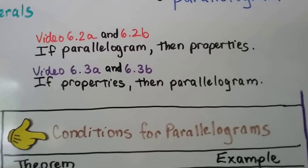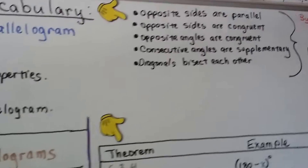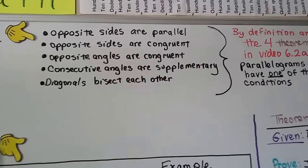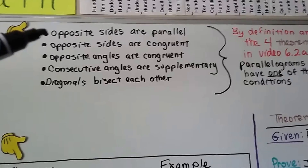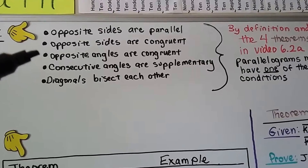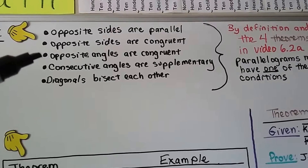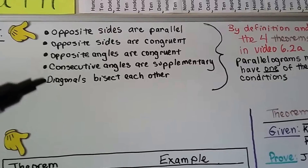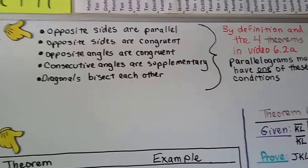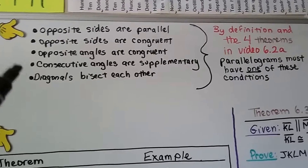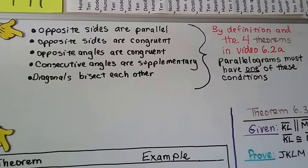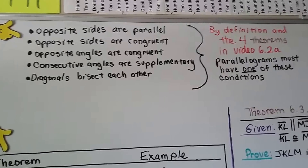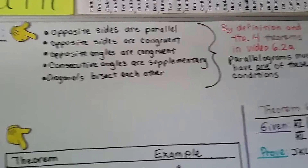Those properties are: opposite sides are parallel, opposite sides are congruent, opposite angles are congruent, consecutive angles are supplementary, and the diagonals bisect each other. This is the definition and the four theorems from the previous videos, and parallelograms must have one of these conditions.